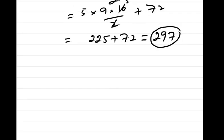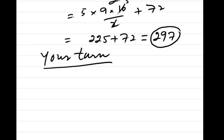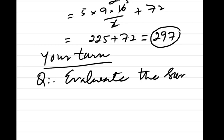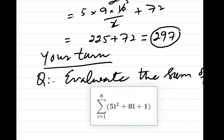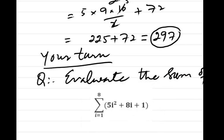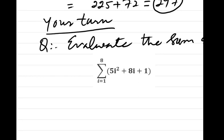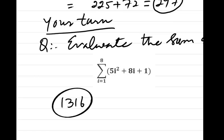Now it is your turn to solve this question: evaluate the sum of this expression. It is similar to the above question but modified a bit. You need to use the Linearity property to solve this summation series. Take some time, use rough work, and evaluate this expression. If your result is 1316, then hurrah — you have well understood the Linearity property. If not, don't worry. Repeat this video lecture, watch it again, and then try this question once again.